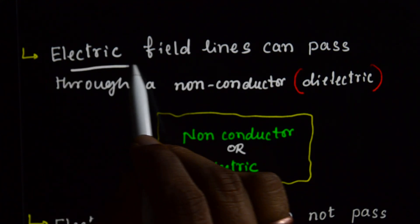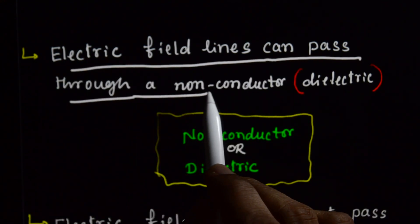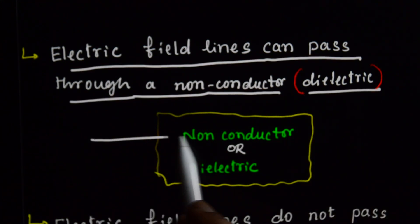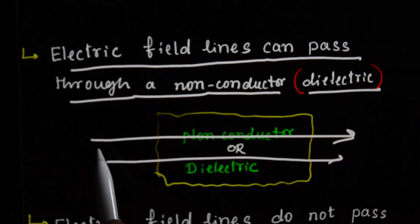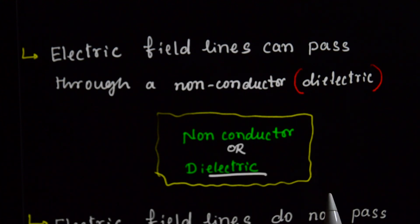And next, fourth property. Electric Field Lines can pass through a non-conductor or dielectrics. Dielectrics through a ram. Electric Field Lines, they can pass through a non-conductor or dielectrics.